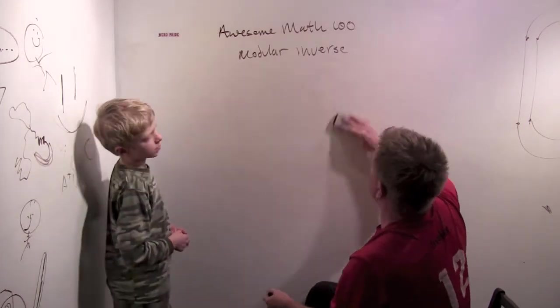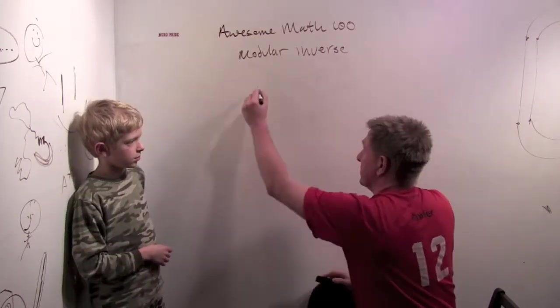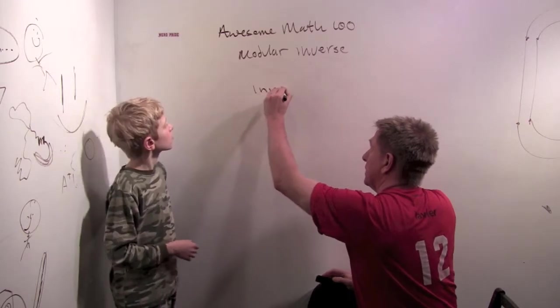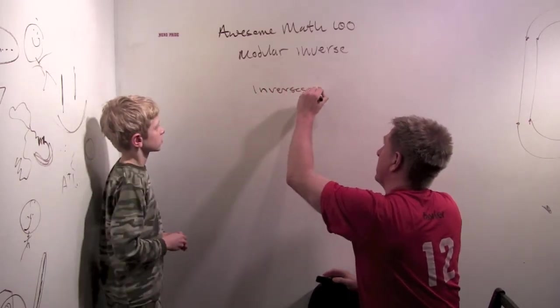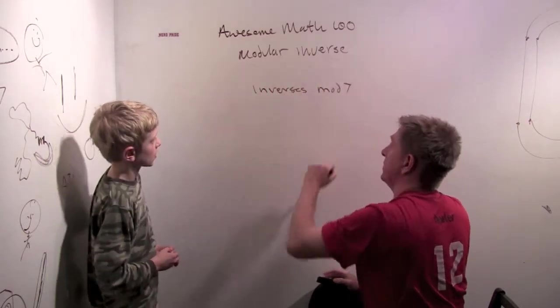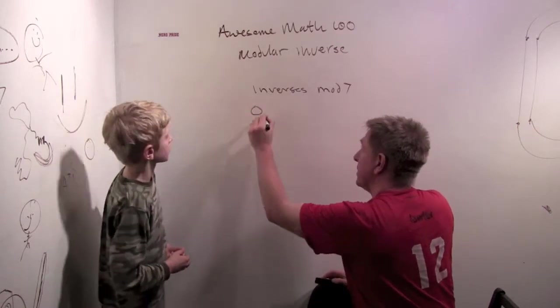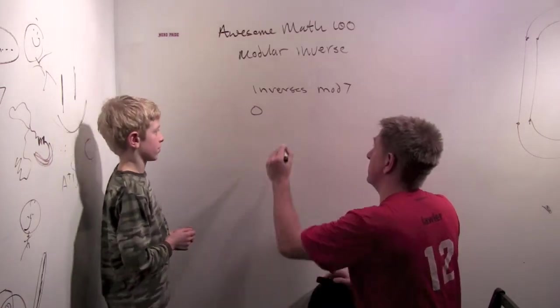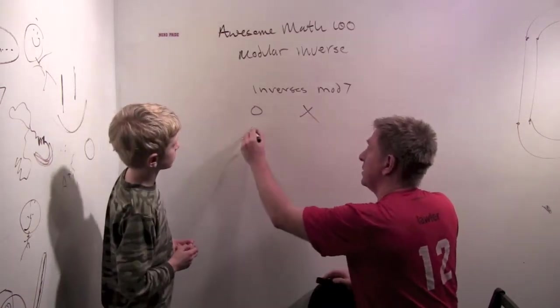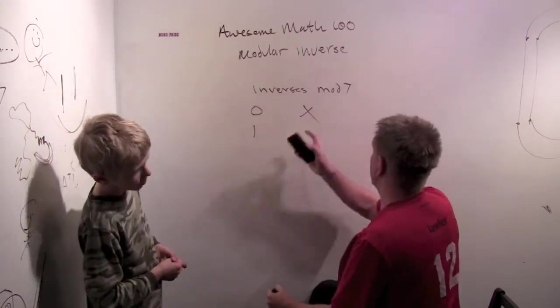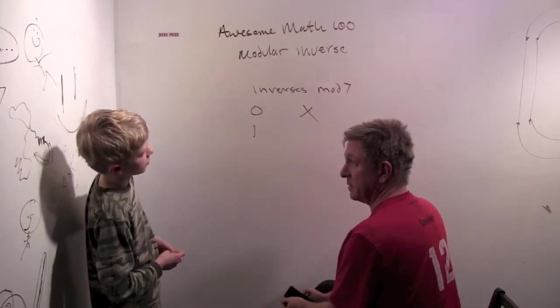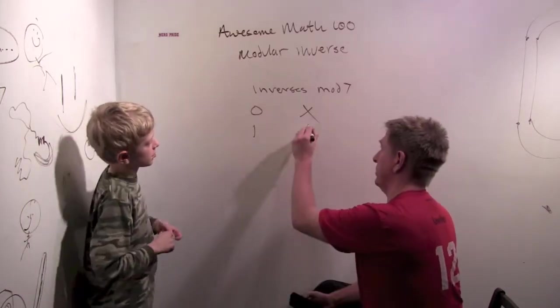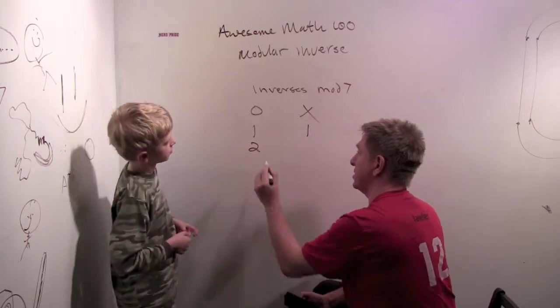So we could ask, what are the inverses mod seven, just for fun. Zero doesn't have an inverse because zero times anything is zero. One times what is equal to one mod seven? One times one. Now it gets more challenging.